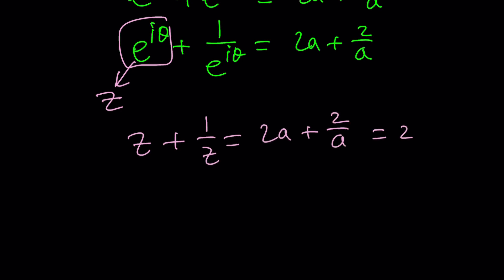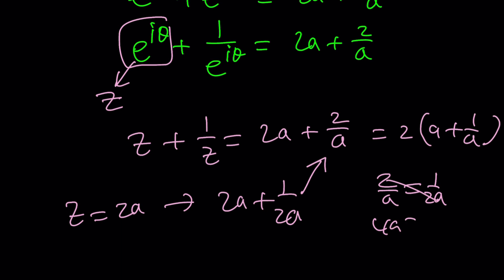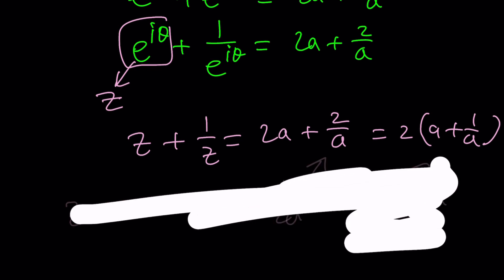So we have z plus 1 over z equals 2A plus 2 over A. If I factor out a 2, this would be 2 times A plus 1 over A. Imagine you had A plus 1 over A instead of 2A plus 2 over A. You could say z equals A or 1 over A. That would be awesome. But sorry, everything is doubled. But no worries, we can still solve it. Maybe z is equal to 2A or 2 over A.